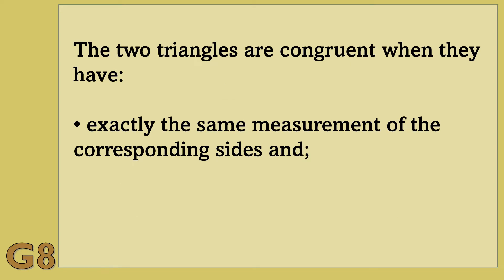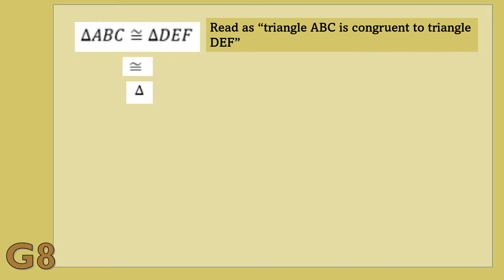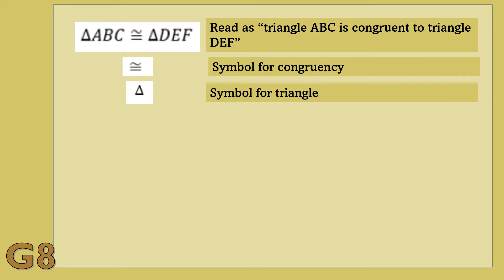The two triangles are congruent when they have exactly the same measurement of the corresponding sides and exactly the same measurement of the corresponding angles. In triangle congruence, you have to remember these symbols and what they stand for. This is read as triangle ABC is congruent to triangle DEF. This is the symbol for congruency, and this is the symbol for triangle.